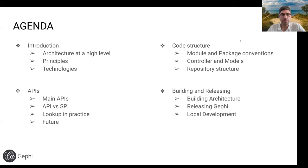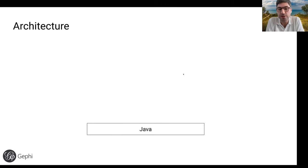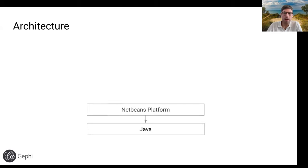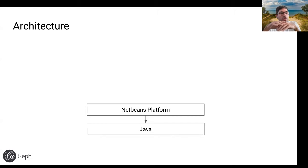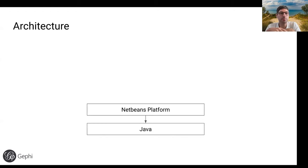Gephi is based on the Java programming language, currently using Java 11. On top of Java, there is the NetBeans platform. This NetBeans platform creates foundations for many of the functionalities — it is also the foundation on which the NetBeans IDE is based. Some knowledge about the platform is needed if you want to modify Gephi's codebase, because you will see NetBeans APIs being used throughout.